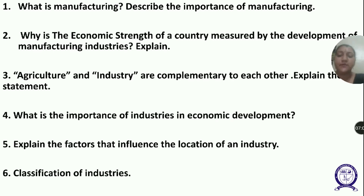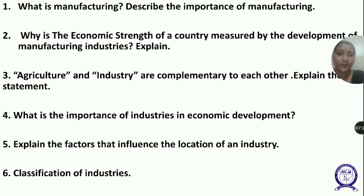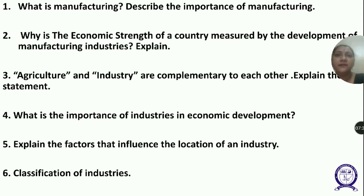Industries can be classified in five ways: first, on the basis of source of raw material; second, according to their main role; third, on the basis of capital investment; fourth, on the basis of ownership; and fifth, based on the bulk and weight of raw material and finished goods.